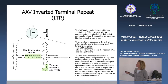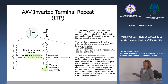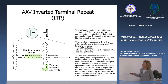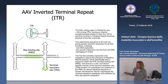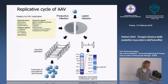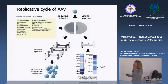L'Inverted Terminal Repeat è una sequenza palindromica all'estremità del DNA a singolo filamento, lunga circa 145 nucleotidi, fondamentale sia per la replicazione del virus che per l'integrazione sito-specifica nel cromosoma 19. REP è capace di legare il REP binding site e tagliare la sequenza specifica chiamata Terminal Resolution Site (TRS), identica a una sequenza sul cromosoma 19 umano.